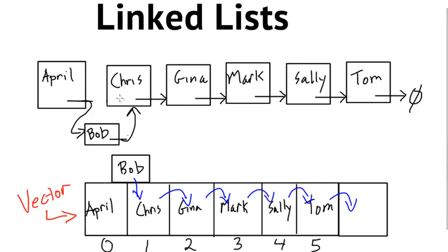That doesn't mean everything's bad about the vector — it's still a very powerful data structure. It really comes down to what operations you're performing. Comparing the linked list versus the vector: the linked list is very good at insertions and deletions because we can do them in a constant amount of time. It doesn't matter how many nodes we have, it still takes the same amount of work — basically just updating a couple of pointers. Whereas with the vector, an insertion or deletion requires shifting elements to the right or left.